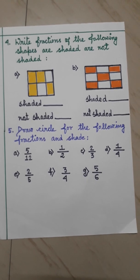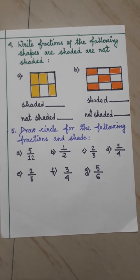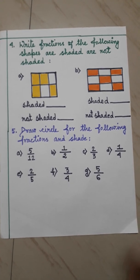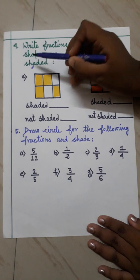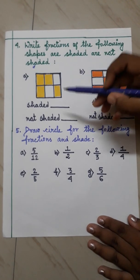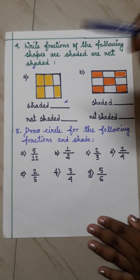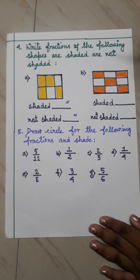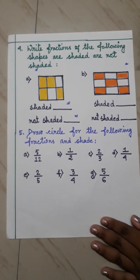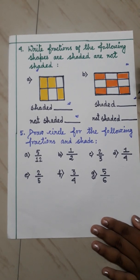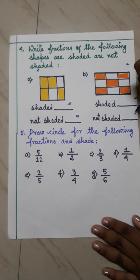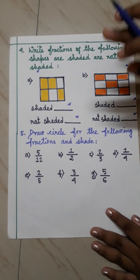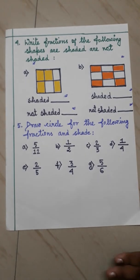In question number 4, you have to write fractions of the folding shapes that are shaded and not shaded. A figure is given — you have to write the fraction that is shaded and the fraction that is not shaded. Similarly for the other figures as well. You will draw these and write the answers, and make sure you color with color pencils.